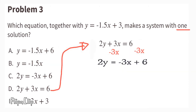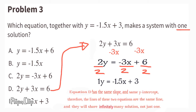Subtracting 3x from both sides for equation D, the equation now reads 2y equals negative 3x plus 6. Dividing all terms by 2, the equation reads y equals negative 1.5x plus 3. Equation D has the same slope and the same y-intercept, so these two lines are also the same line and share infinitely many solutions, not just one.